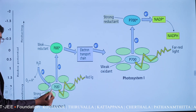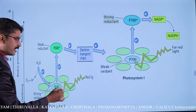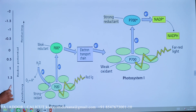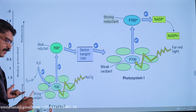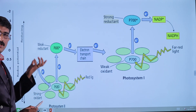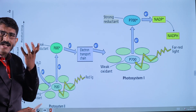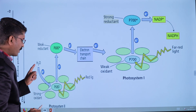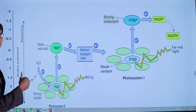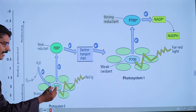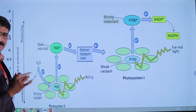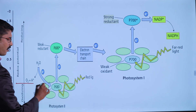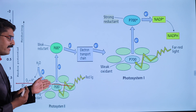In non-cyclic photophosphorylation, p680 molecules are placed in the highly positive region of the redox potential scale — between +0.2 and +0.3. They have a high affinity to take electrons, so they tend to take electrons from anywhere. They photolyze water and take those electrons. Therefore, p680 acts as a strong oxidant, having a very positive redox value.